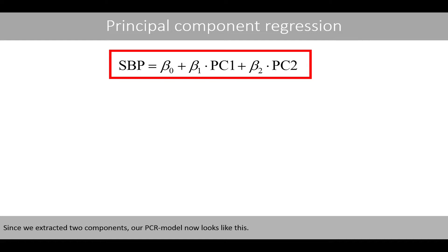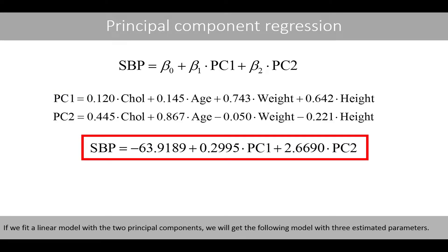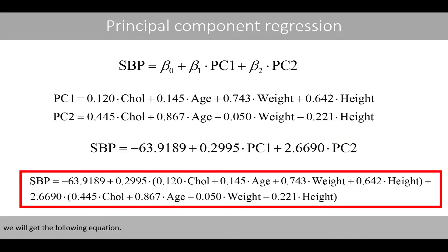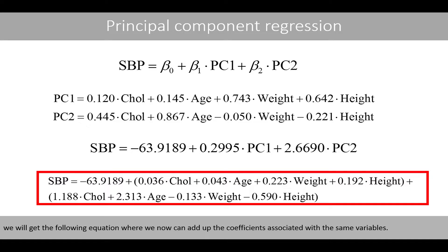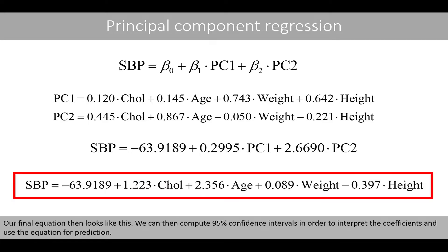Since we extracted two components, our PCR model includes PC1 and PC2, each with weights across the four variables. Fitting the linear model with two principal components gives three estimated parameters. Plugging in the equations for PC1 and PC2 and multiplying coefficients by the terms in brackets, we can add up coefficients associated with the same variables to get a final equation. We can then compute 95% confidence intervals to interpret coefficients and use the equation for prediction.